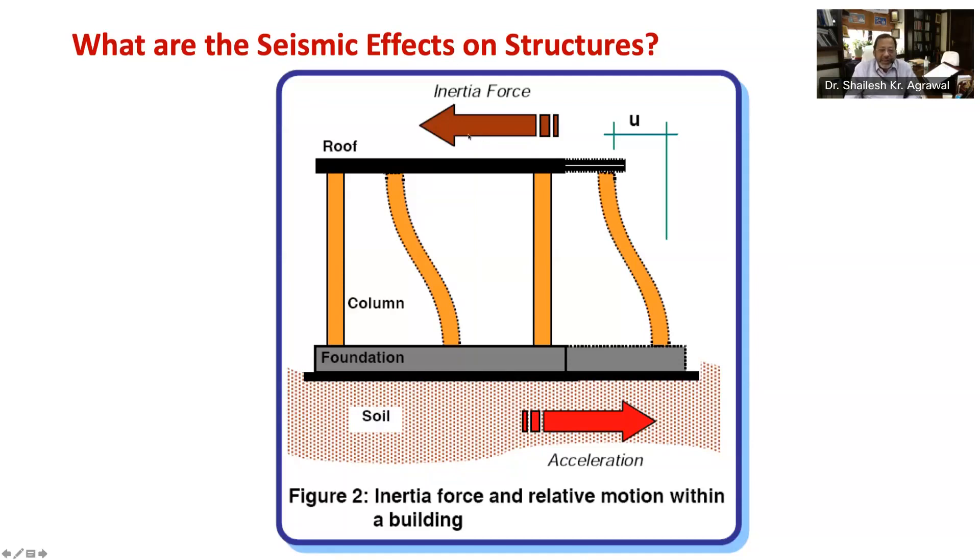This inertia force generated in the roof is to be transferred to the ground through these columns, and this inertia force causes forces in these columns. During shaking, columns also undergo relative movements between their ends, which is shown by the quantity small u in this figure. The larger is the relative displacement u between top and bottom of the column, larger will be the induced force in column. Also, stiffer is the column, having larger size, larger will be the force induced in the column due to earthquakes. This internal force in the column is also known as stiffness force, which is calculated as stiffness of the column multiplied by this relative displacement between its end, denoted by small u here.